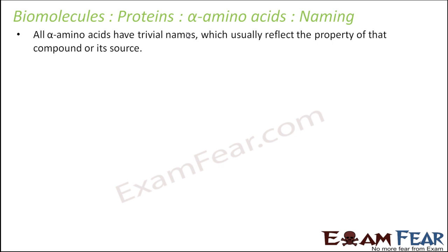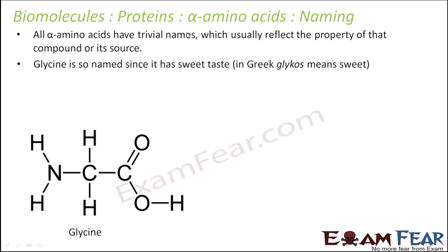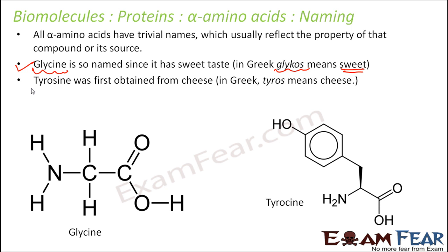For example, there is an amino acid named glycine. It is named glycine because 'glycos' is a Greek word meaning sweet, and this amino acid has a sweet taste. There is also tyrosine, named because 'tyros' is a Greek word meaning cheese — it was first obtained from cheese. That is why it was named tyrosine.